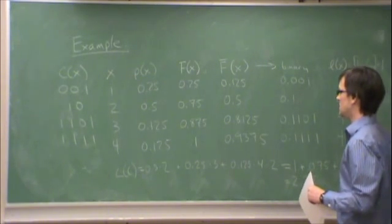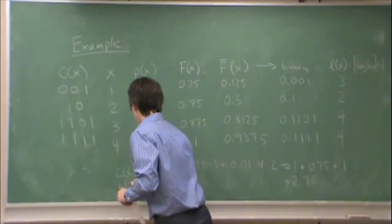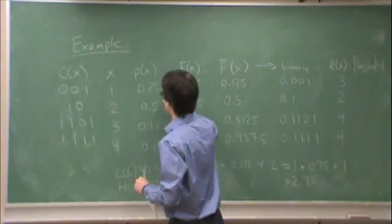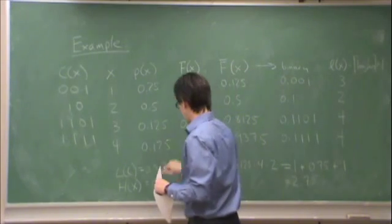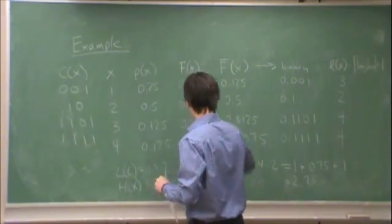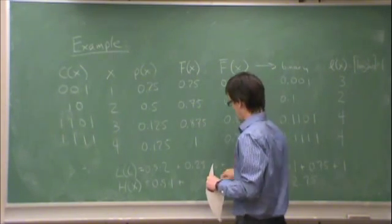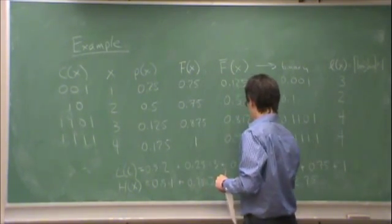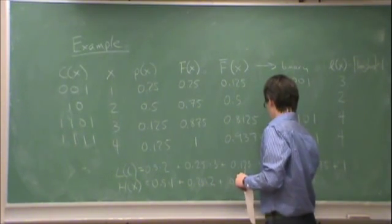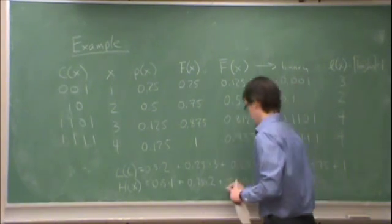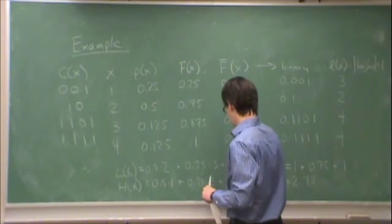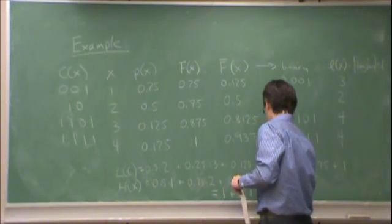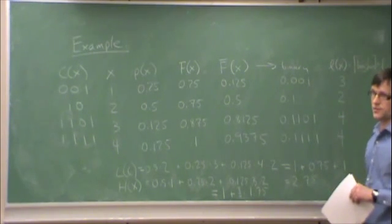Entropy, not too hard to show. Well actually, let's show it. What's entropy? It is 0.5 times log 1 over 0.5, which is 1, plus 0.25 times log 1 over 0.25, which is 2, plus 0.125 times log 1 over 0.125, which is 3, times 2 is 1.75. So in fact, we have exactly one bit penalty over entropy.